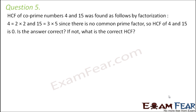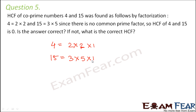Question number 5: HCF of co-prime numbers 4 and 15 was found as follows. 4 = 2 into 2 and 15 = 3 into 5. Since there is no common prime factor, someone concluded HCF is 0. Is this correct? Absolutely not — when we write 2 into 2 there is a 1 hidden which we do not write. So 1 is always a common factor between any two numbers. The HCF will not be 0 but will be equal to 1.